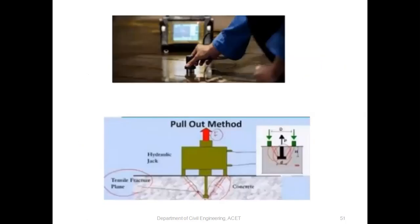The pull-out method: you apply the instrument on the surface of a slab or beam. It goes into the tensile fractured plane and the value is displayed on the screen, from which the concrete strength is measured.